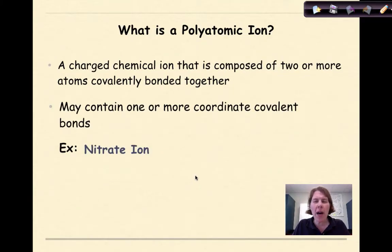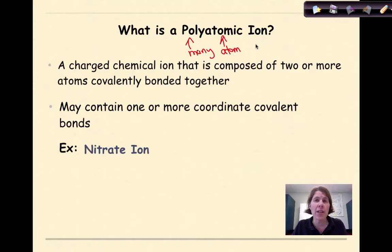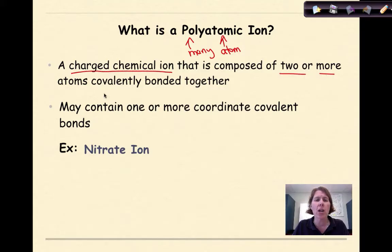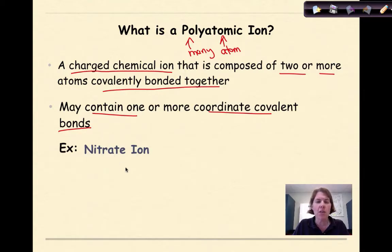Now let's talk about what a polyatomic ion is. Looking at the word 'polyatomic': poly means many, atomic means atom, and ion means it's going to have an overall charge. A polyatomic ion is a charged chemical ion that is composed of two or more atoms covalently bonded together. It may contain one or more coordinate covalent bonds — not all the time, but sometimes it does.